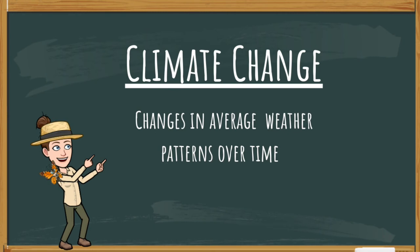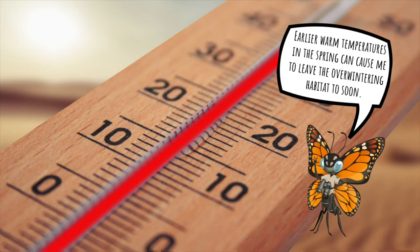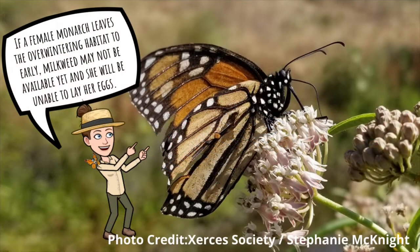Let's explore the threat of climate change, which is changes in average weather patterns over time. Earlier warm temperatures in the spring can cause monarchs to leave the overwintering habitat too soon. If a female monarch leaves the overwintering habitat too early, milkweed may not be available yet, and she will be unable to lay her eggs.